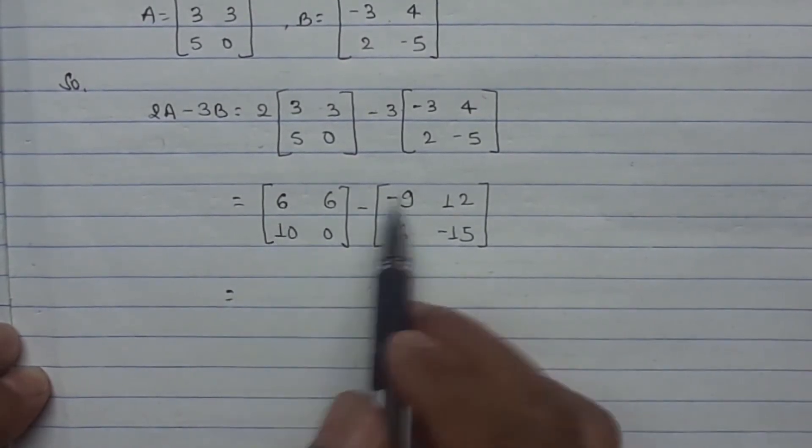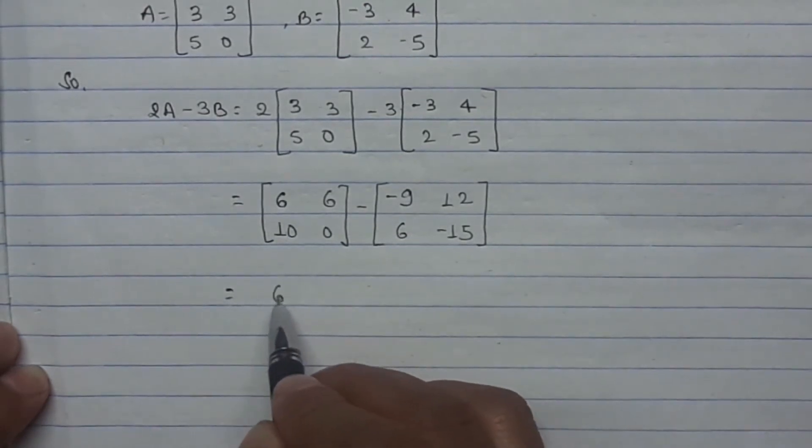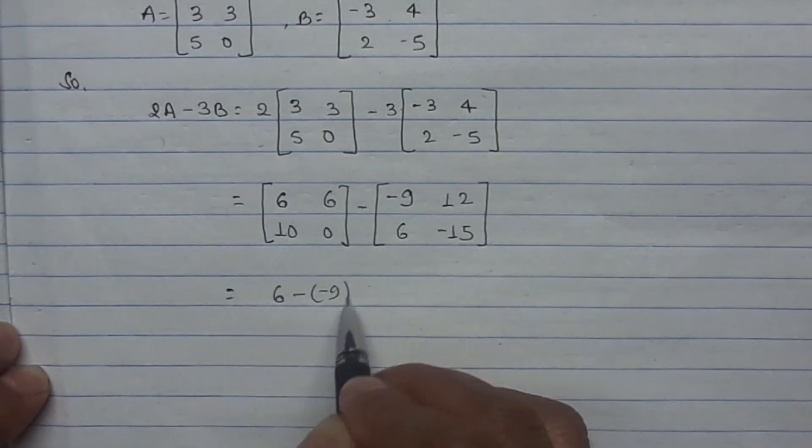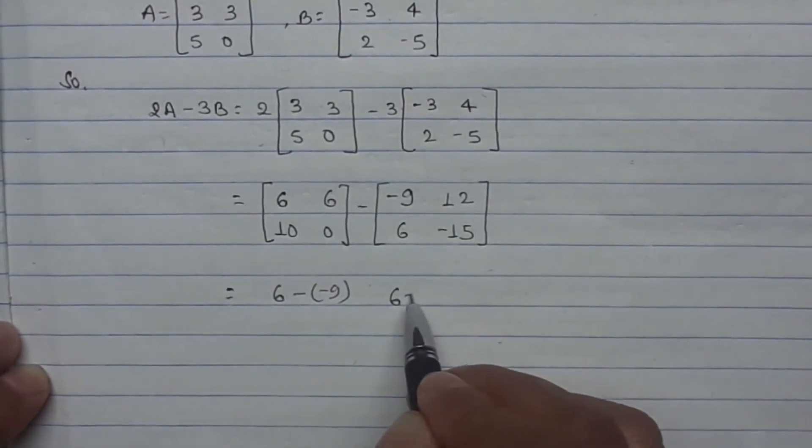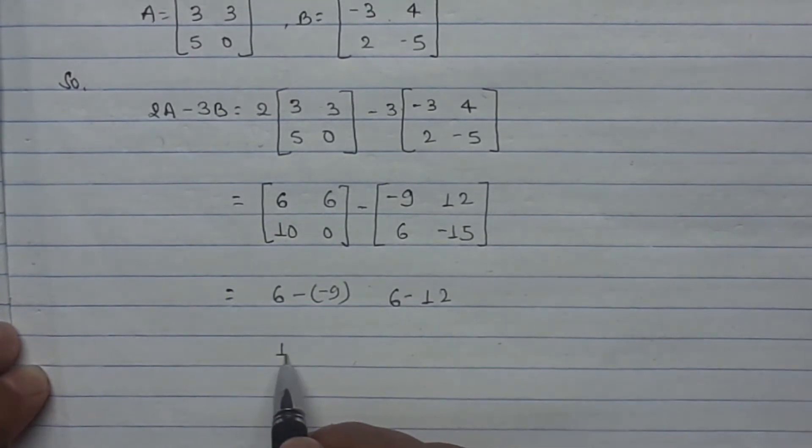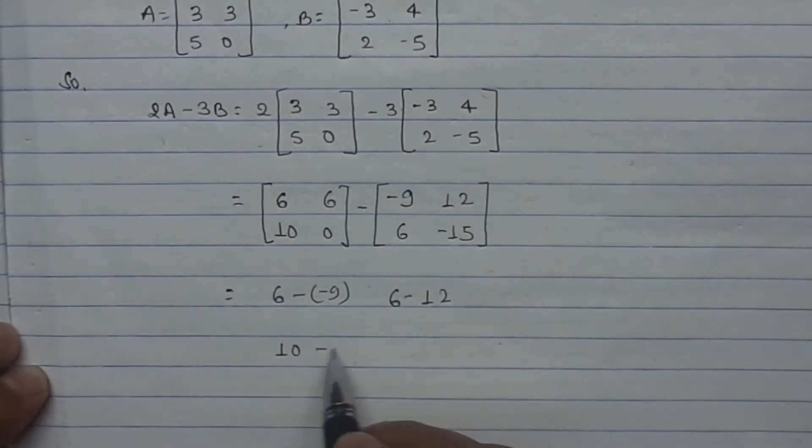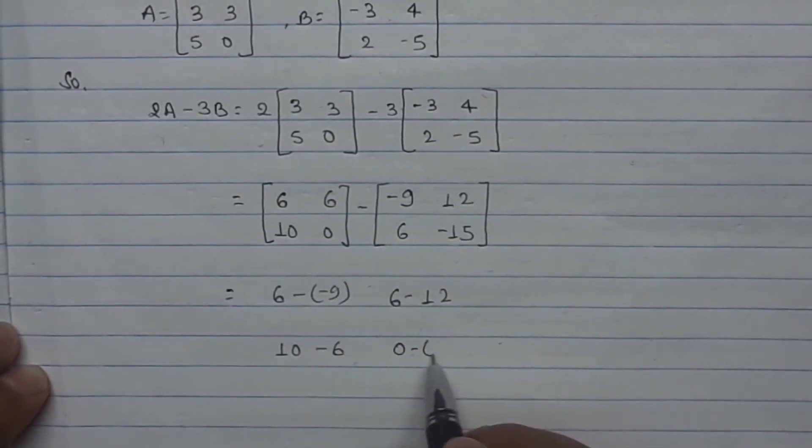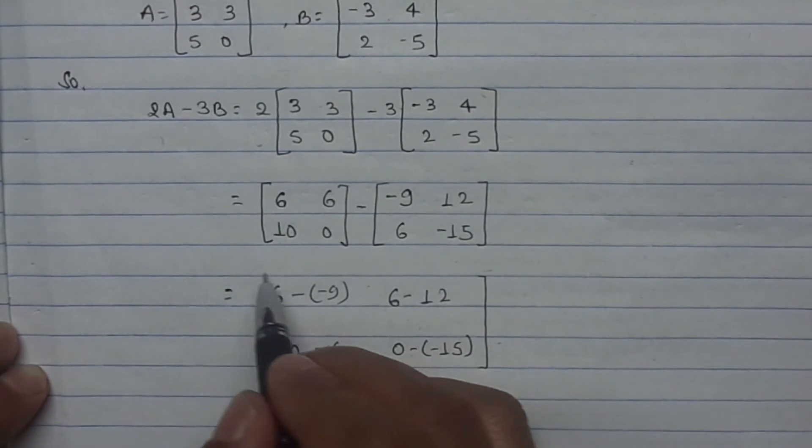6 minus this -9, this 6 minus this 12, this 10 minus 6, and 0 minus -15. Put in big bracket.